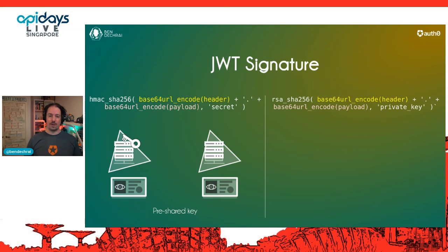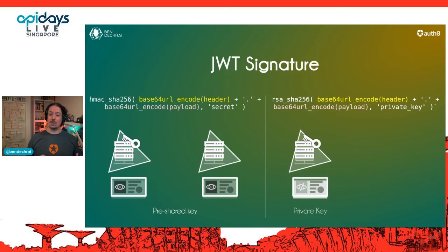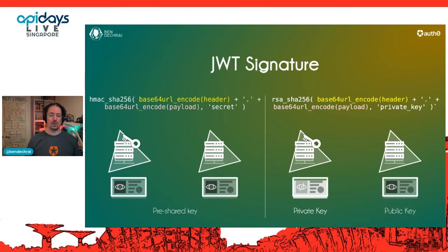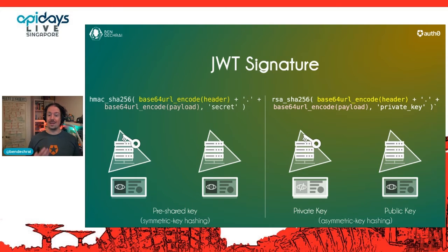The other common algorithm is RSA-SHA256, or RS256, and this takes a private key instead of a secret. The identity server has the private key, and the public key can be passed to all applications — there's a convenient way of getting that from most identity servers. So we have symmetric key-hashing algorithms and asymmetric key-hashing algorithms, which have their pros and cons. Symmetric is faster; asymmetric is arguably more secure because the private key never leaves the identity server.